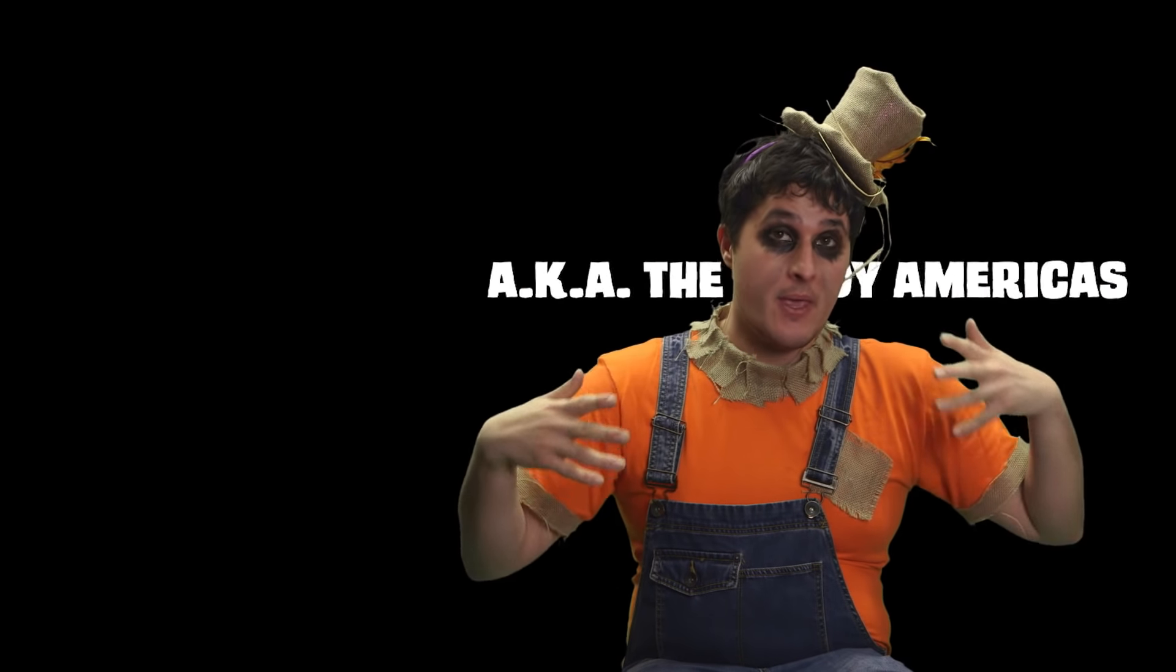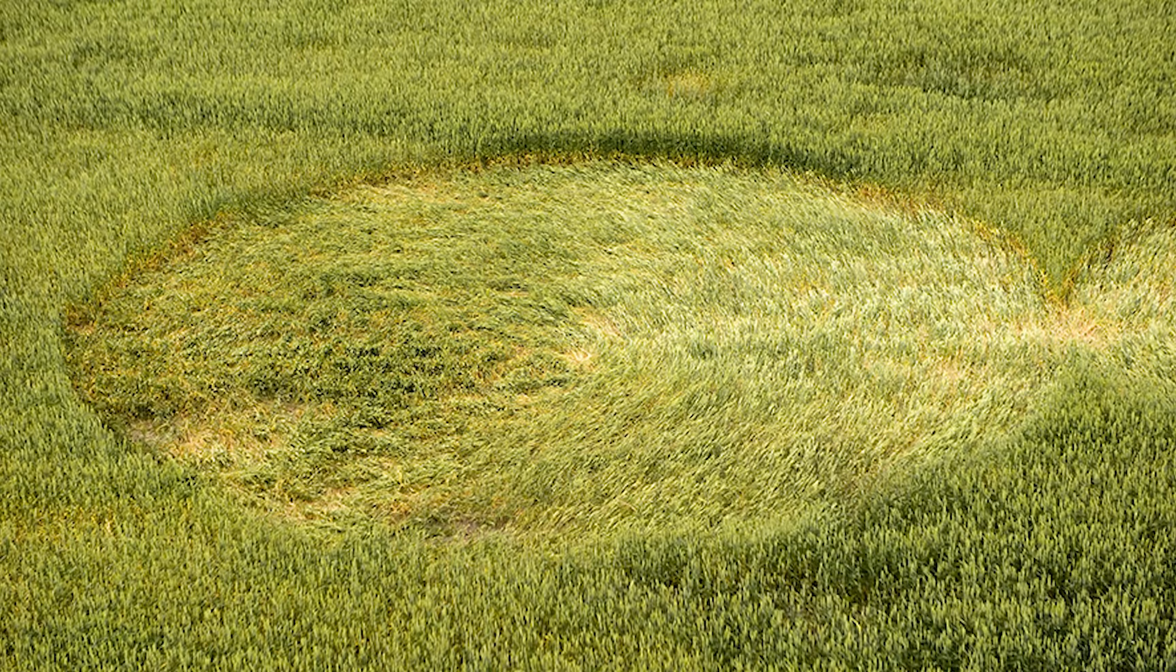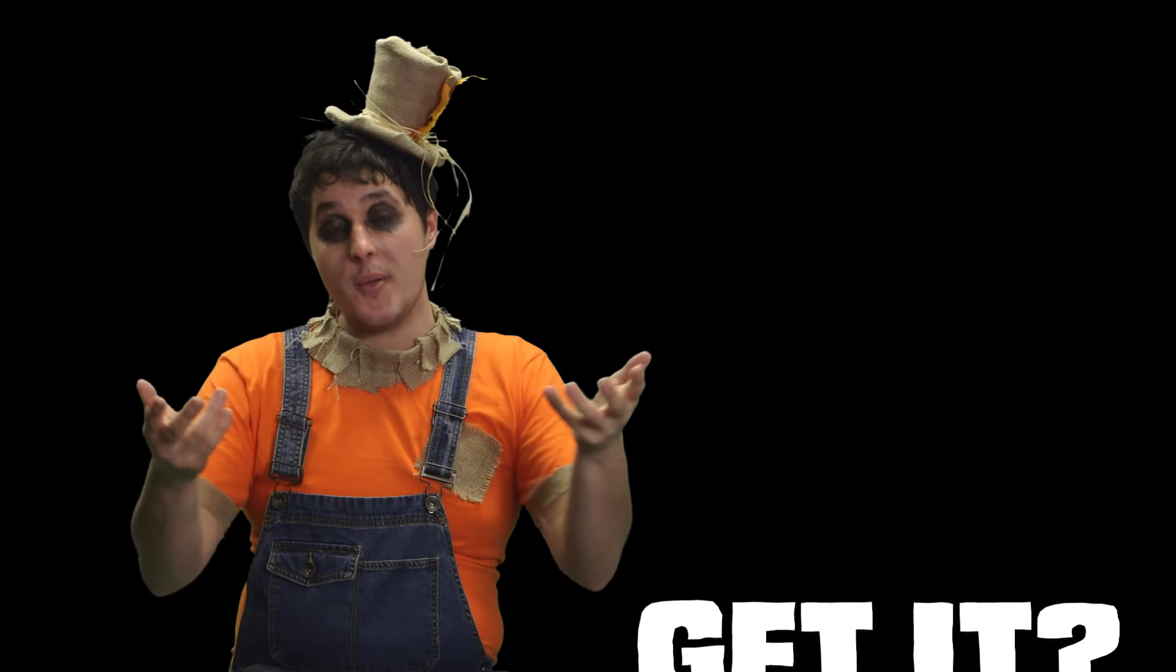These initial sightings occurred primarily in English-speaking countries like the UK, Canada, and Australia and starting out were nothing more than very simple circular designs like this. As news of these initial sightings spread and crop circles became more and more associated with UFO activity, they began cropping up everywhere. Reports of crop circles surged in the 80s and 90s and their patterns started getting more and more complex to the point where we went from this to this.